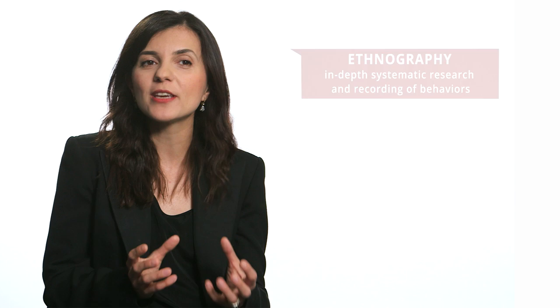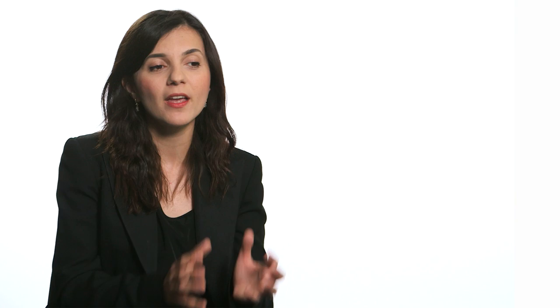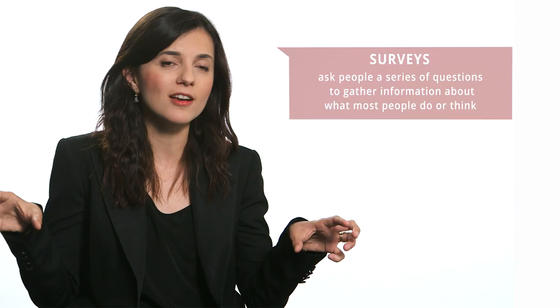Some social scientists do in-depth ethnographic studies and ask people about their social ties and their influence on decisions. The downside of that method is you can't really do a large-scale study and interview a lot of people, so you can't generalize from it. Another method is to survey a lot of people, but then you can only ask limited questions about friendships and won't get a sense of the full structure of their social ties.